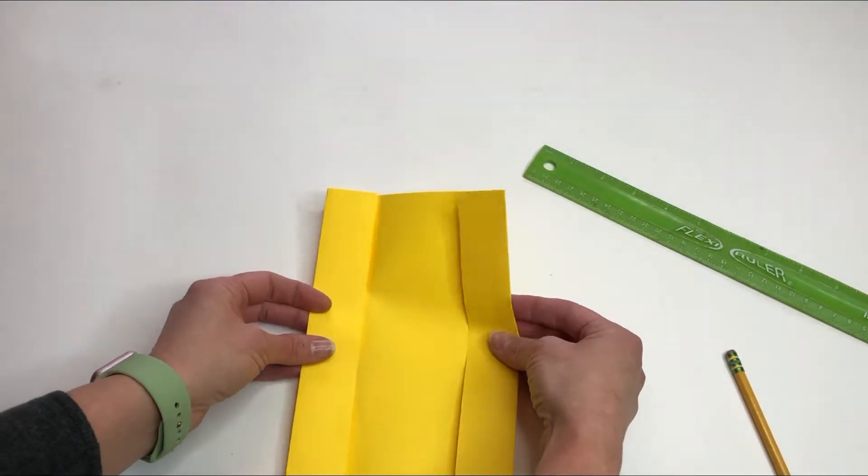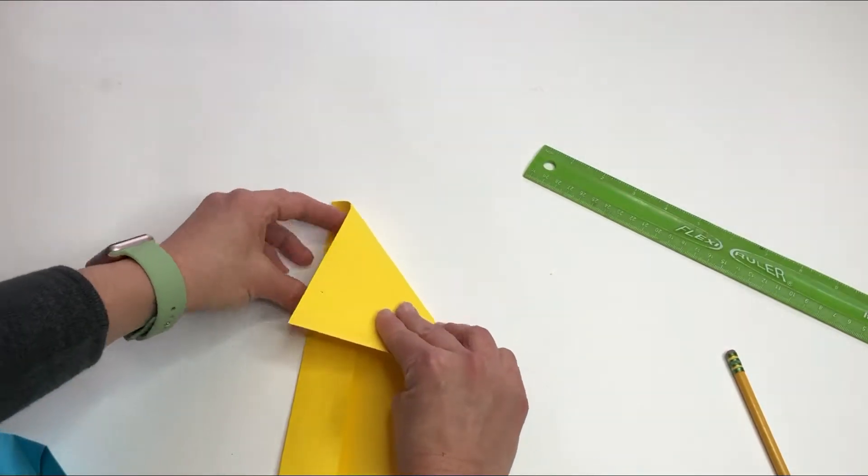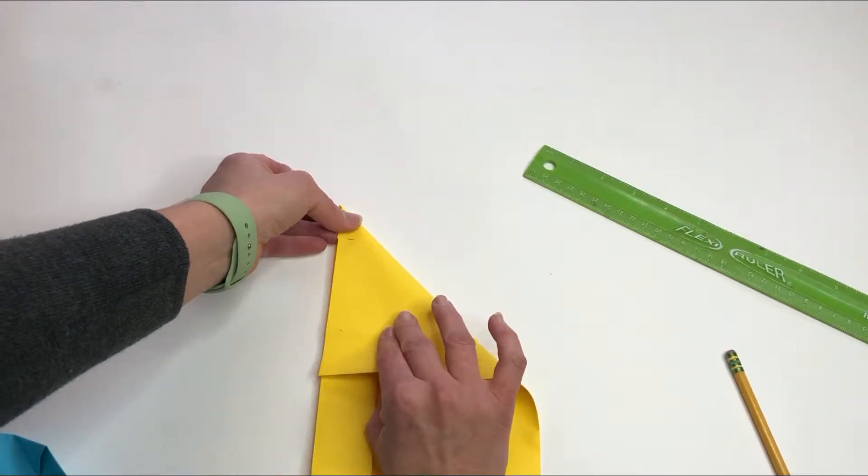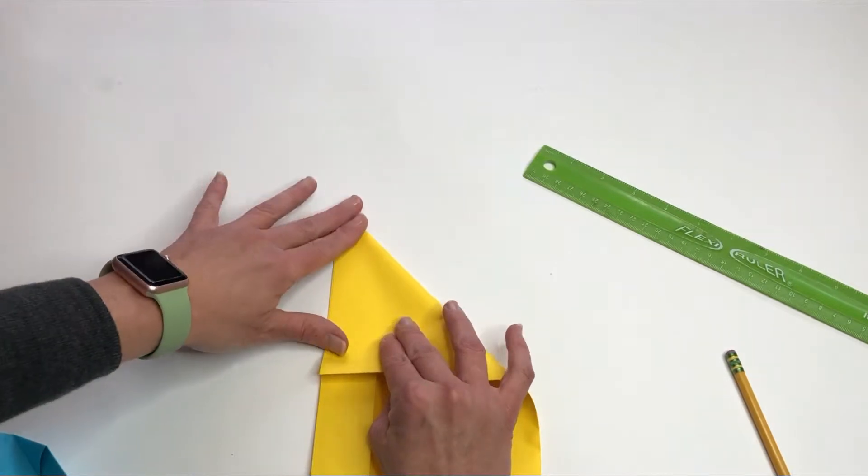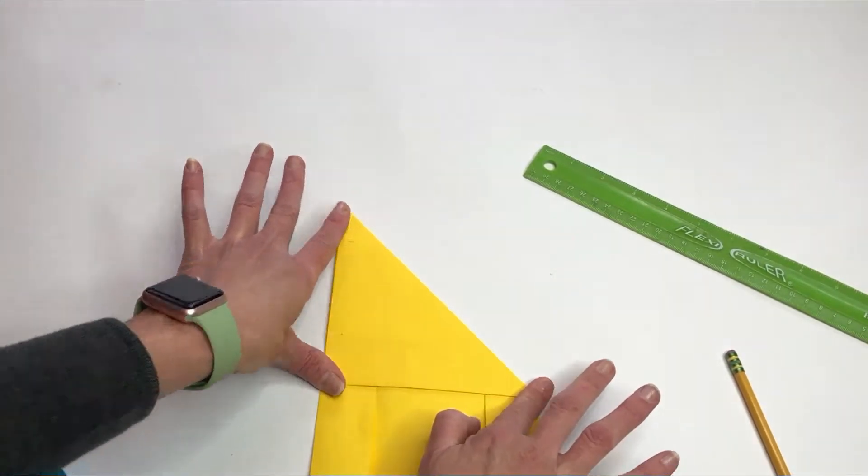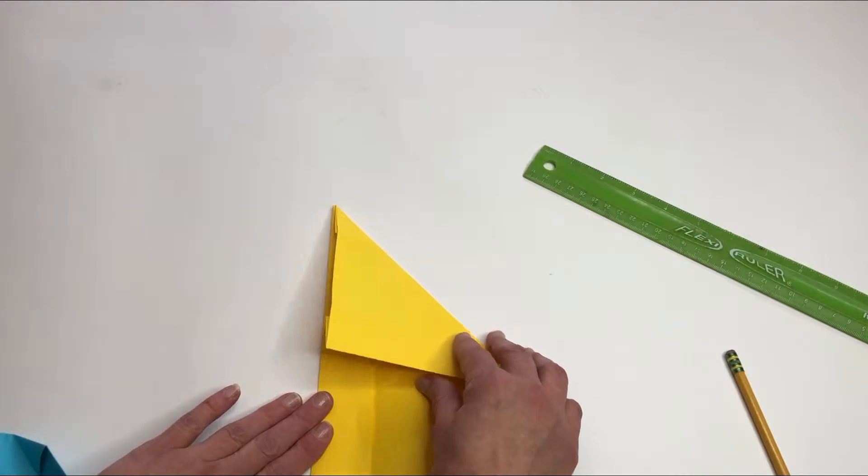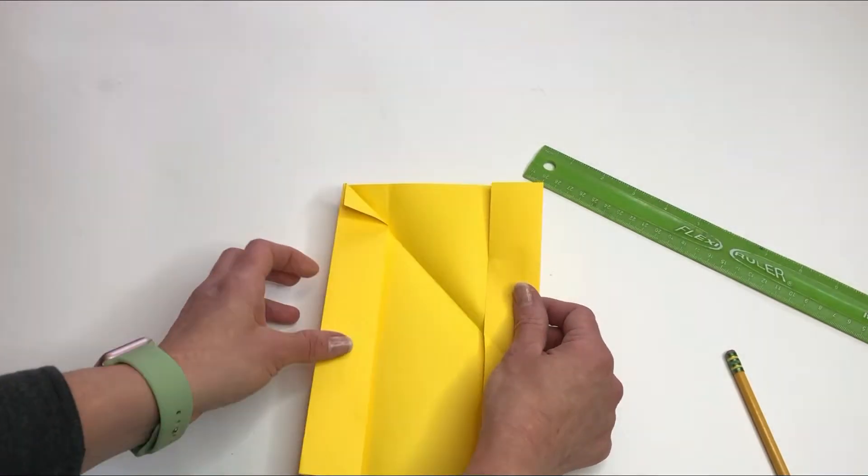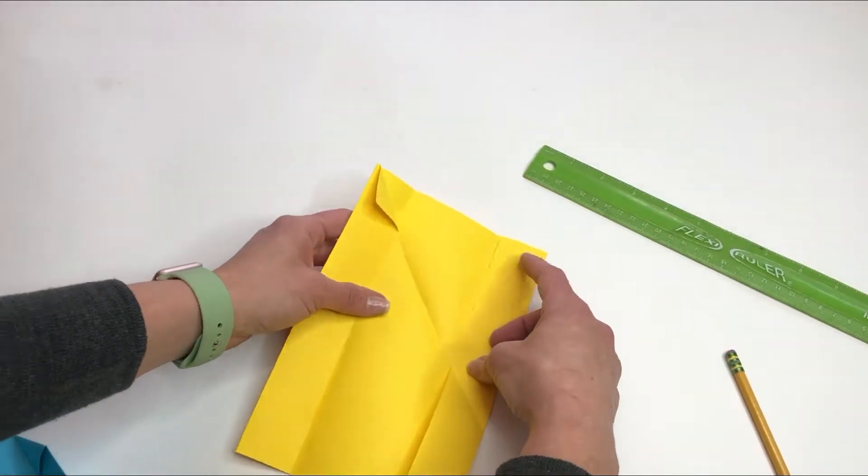Now take this edge and fold it diagonally to the side. Open it back up and do it to the other side just like you did before.